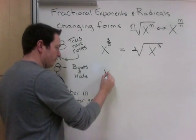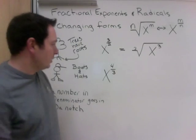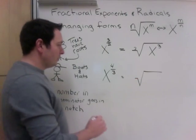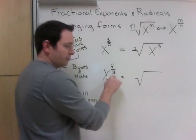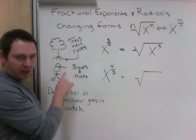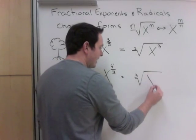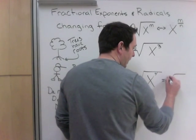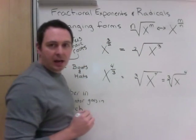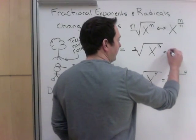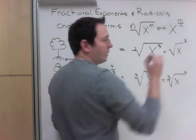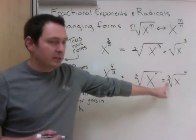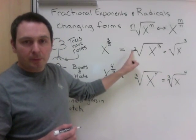For boots and hats: say you are x to the power of 4 thirds. When you come into your house, you leave your boots at the door — boots are on the bottom — and your hat goes up on the rack. So the 3 goes in the root position and the 4 goes on top. These can also be written with the hat up top inside the root. Note: we don't need to show the 2 for a square root — it's always a square root if it doesn't say otherwise.